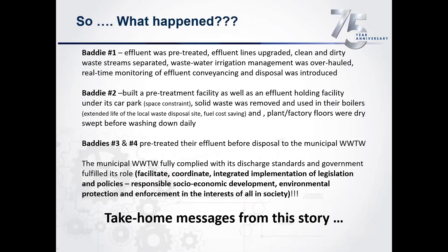The other industry was a pulping or furniture-making operation. Whenever they had a thermal physical process compressing pulp to make masonite doors, a lot of high COD, low BOD effluent was generated and then irrigated onto farmland, causing groundwater pollution. They cleaned up that mess as well. A range of interventions happened: effluent pretreated, effluent lines upgraded, clean and dirty waste streams separated, wastewater irrigation management, real-time monitoring, and conveyancing was introduced.